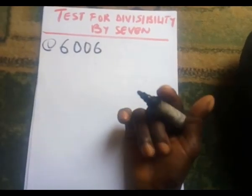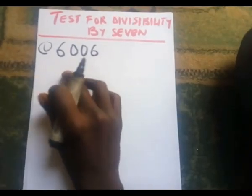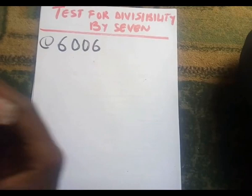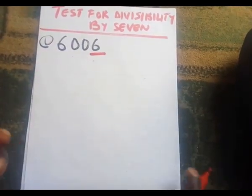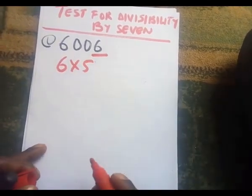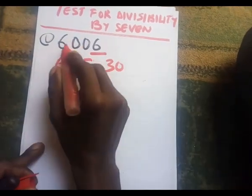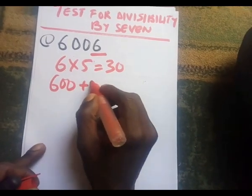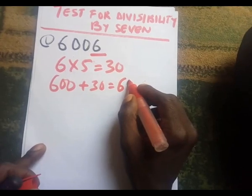The question is: can this be divisible by seven? The test is as follows — you take the last digit of the number. In this case the last digit is six. You multiply six by five, and you get thirty. Then you add the remaining digits, which is six hundred, so you have six hundred plus thirty, which equals six hundred and thirty.